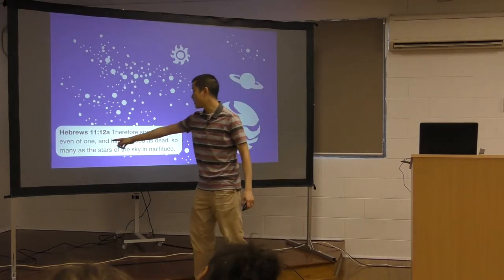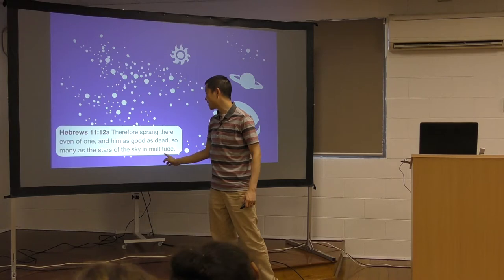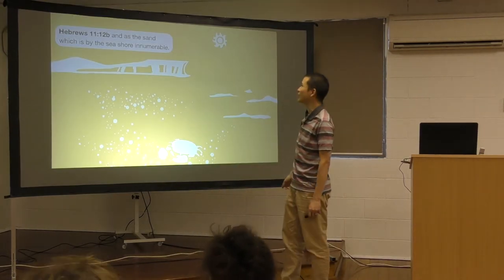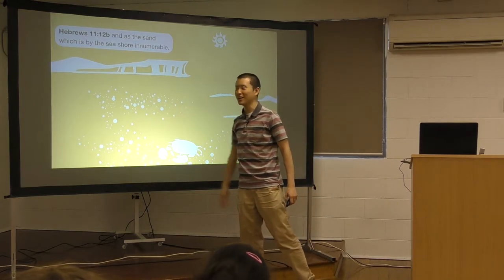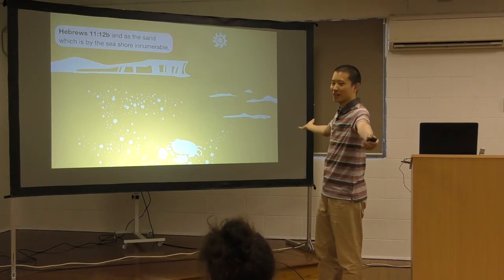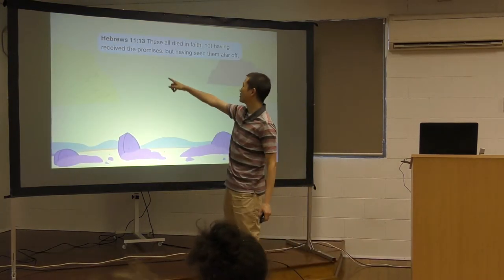Therefore sprang there even of one, of who? Him? And him as good as dead, so many as the stars of the sky in multitude, and as the sand which is by the sea, sure innumerable. Saying from that so many, he had so many children from there. How many Israelites were there after that?